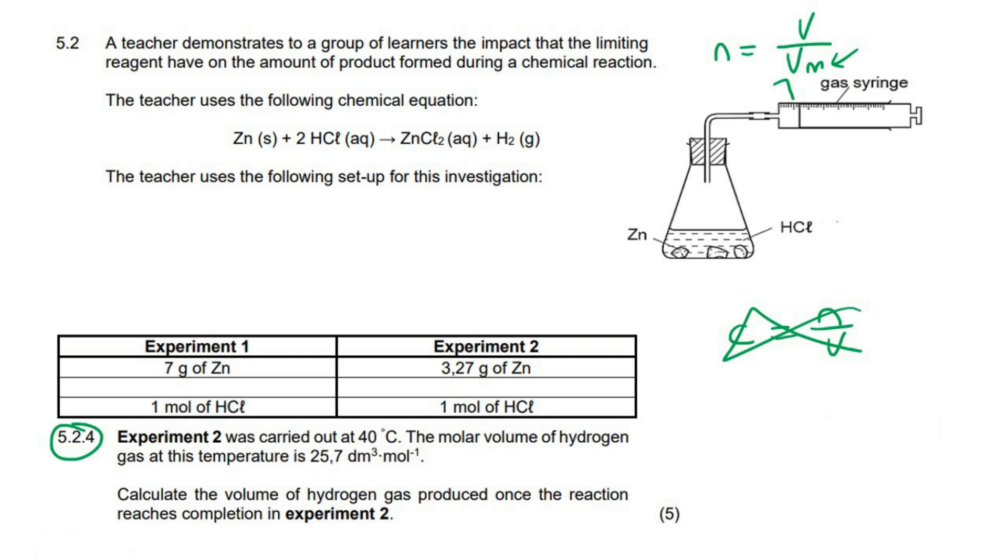So it says here, experiment 2 was carried out at 40 degrees, the molar volume of that is that. Calculate the volume. They're not saying that the volume of hydrogen is that. They're saying it's molar volume, so that means it's that per mole. So just know that this 25.7 is the Vm. It's not the V.